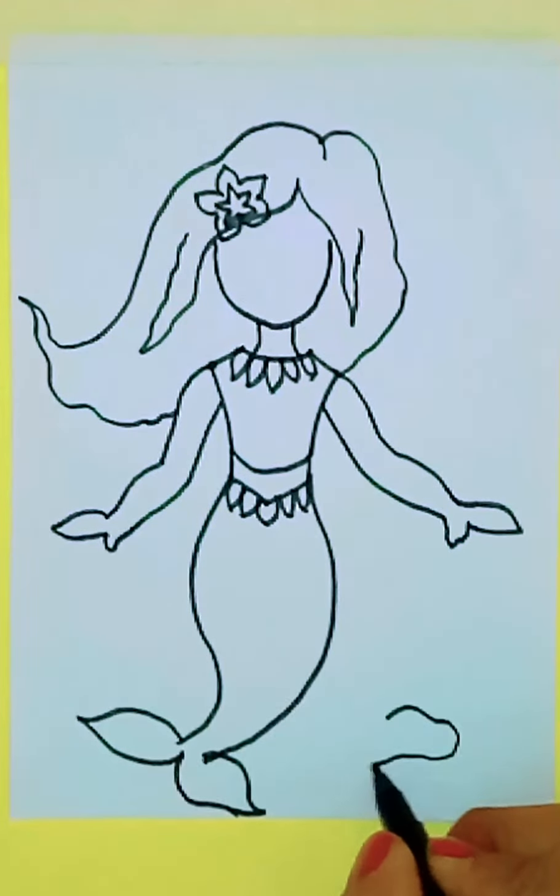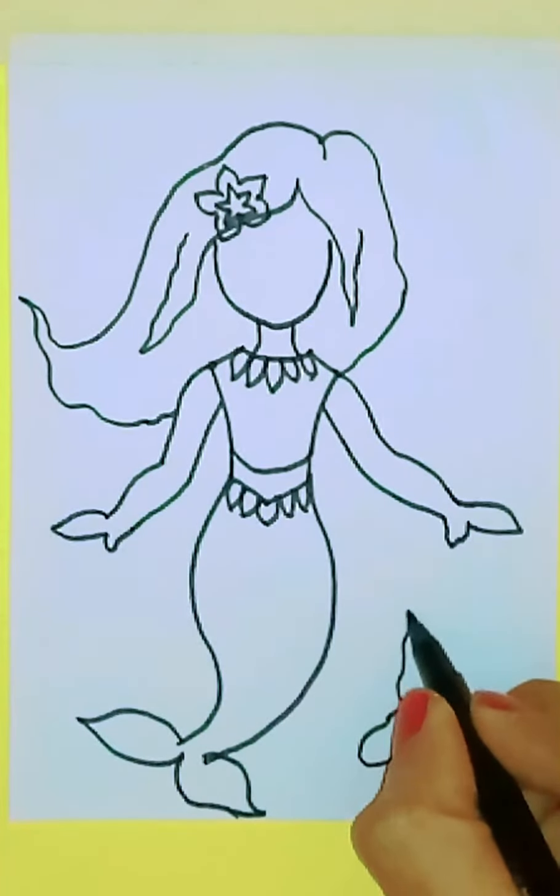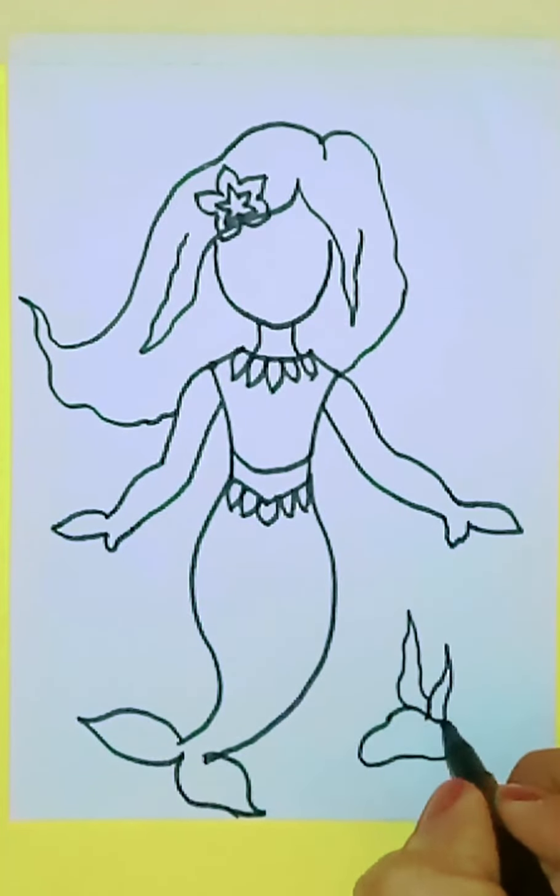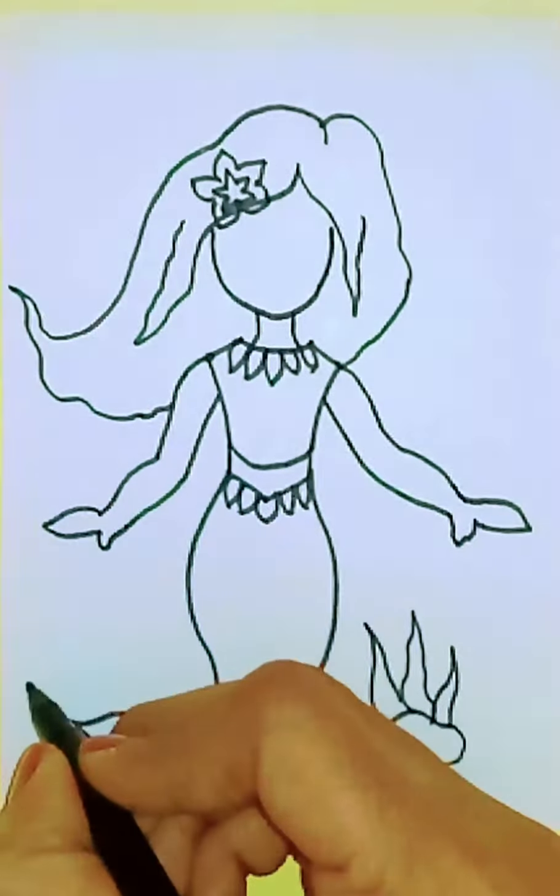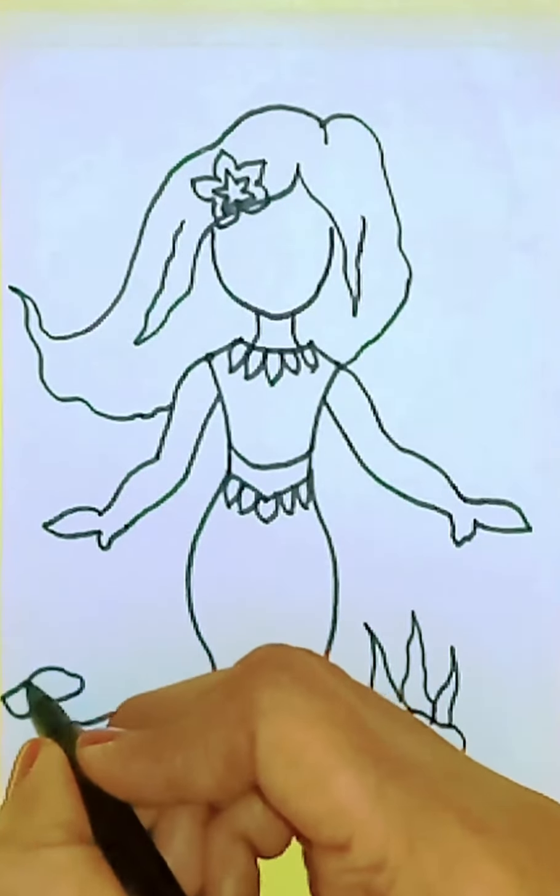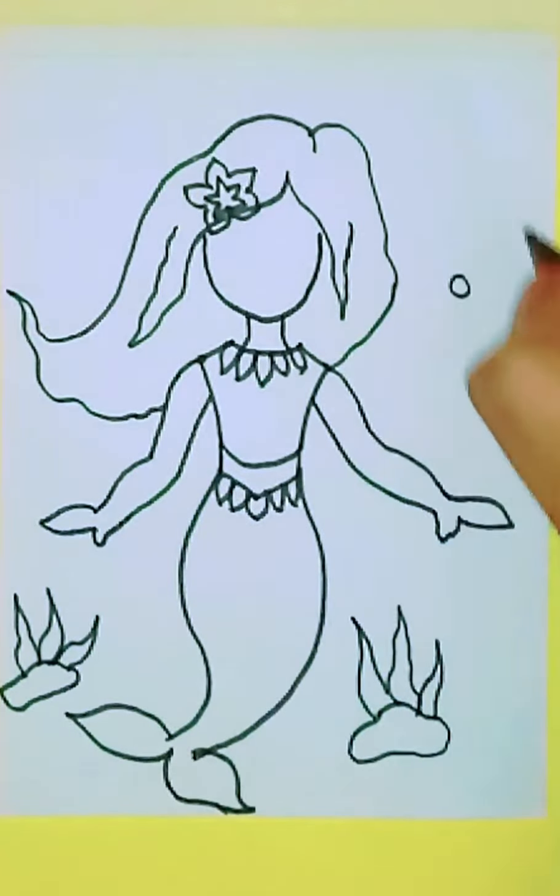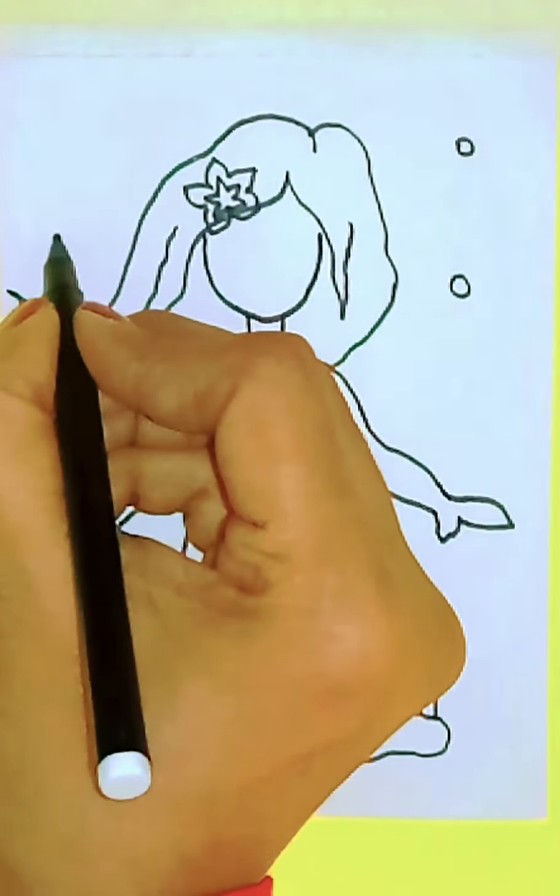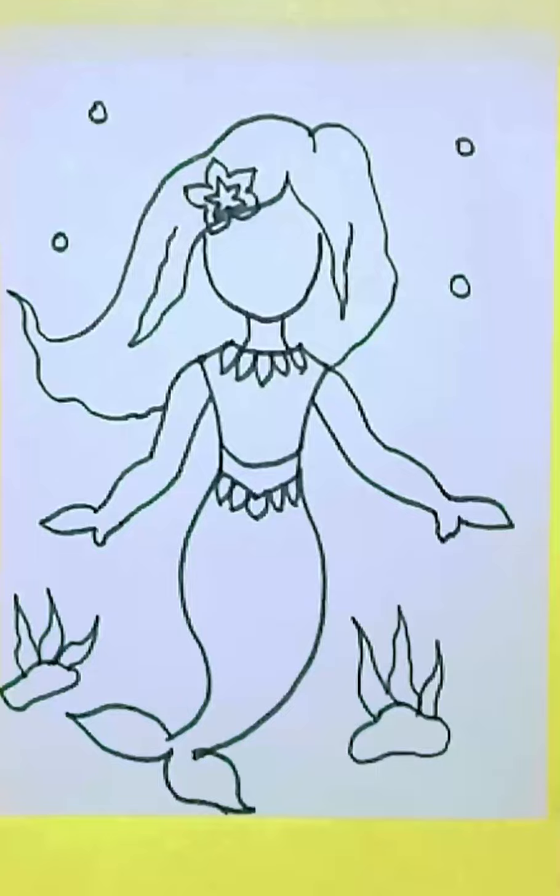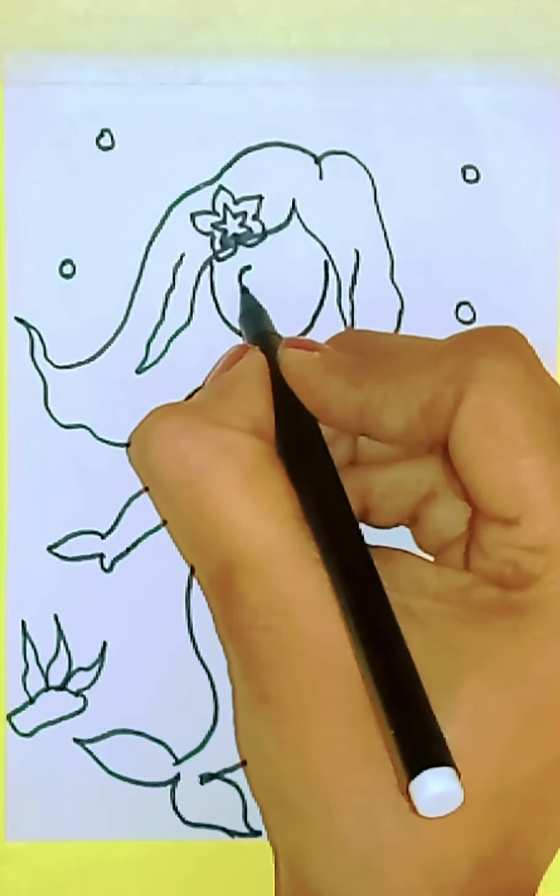For extra detailing I draw some pebbles and water plants. Just draw pebbles using some curved lines and draw the water plants using sharp pointed leaves. Draw some bubbles here and there randomly. Now let's move on to drawing her face.